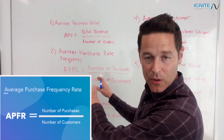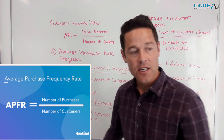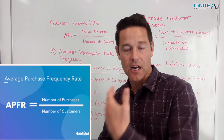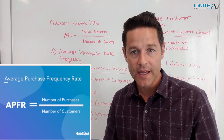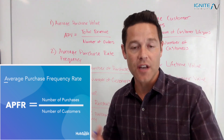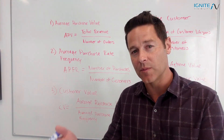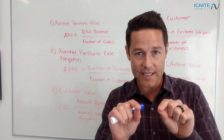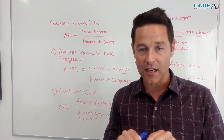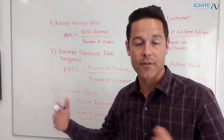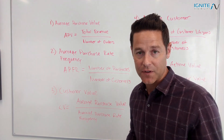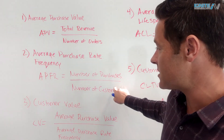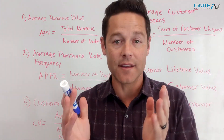Item number two is average purchase rate frequency. This number tells you how often any customer will generally purchase, which is really important because it lets you know what a good number is when looking at a customer and how many times they should be purchasing. You'll be able to tell if they're over or under, and if you can raise that amount from three or four purchases to five or ten, that's obviously going to be beneficial. Average purchase rate frequency is calculated by the number of purchases divided by the number of customers.